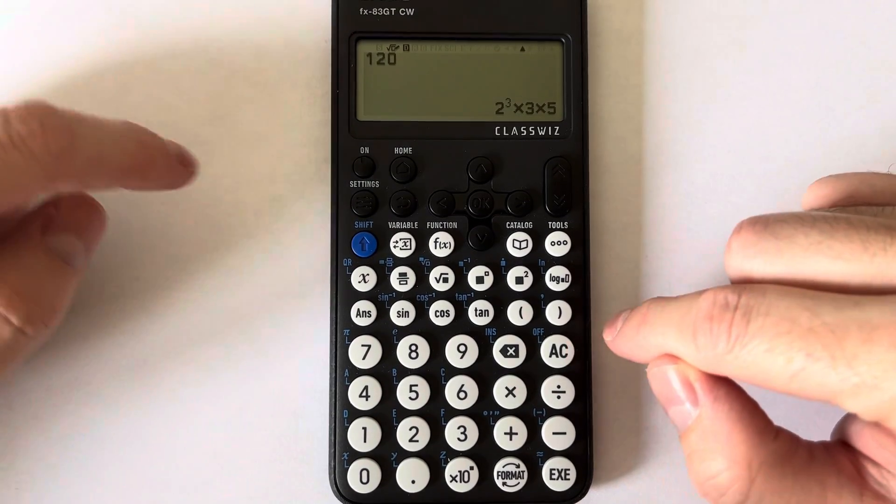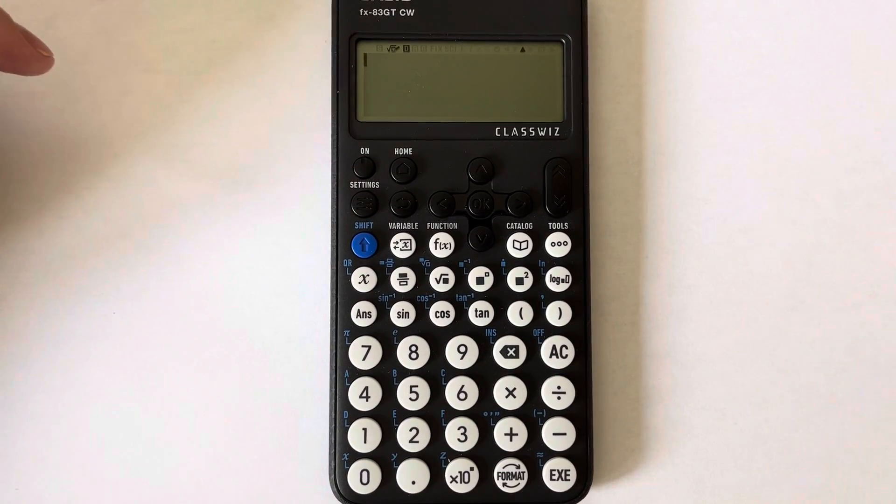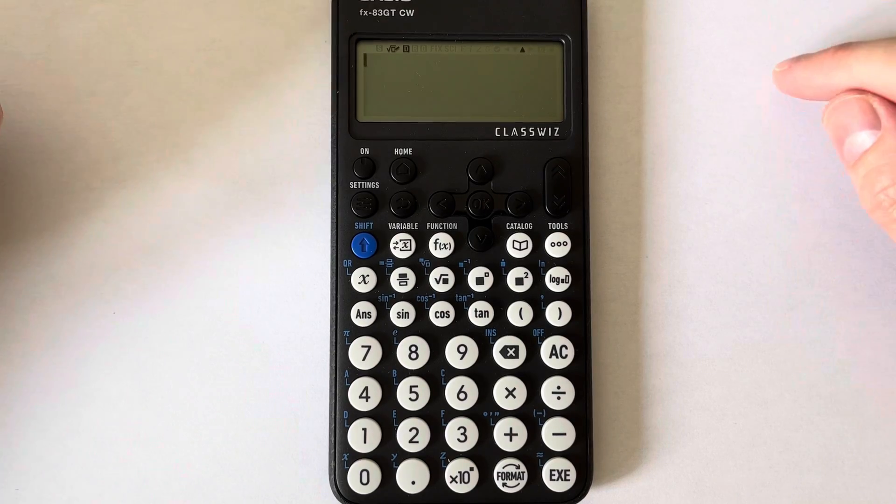So let's do one more example. This time let's work out the product of prime factors of 300.